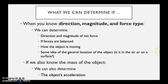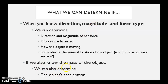When we add magnitude — how strong each force is — we can tell the direction and magnitude of the net force, whether forces are balanced, how the object is moving, and its general location. And because we have magnitude, if we know the mass, we can also determine the object's acceleration.